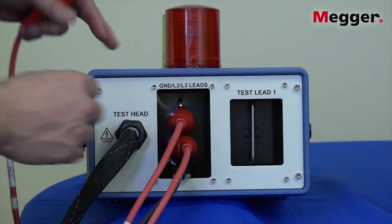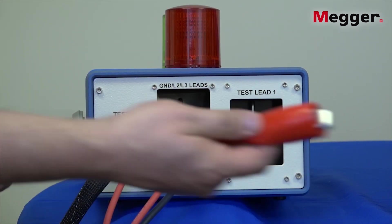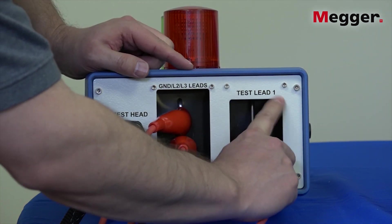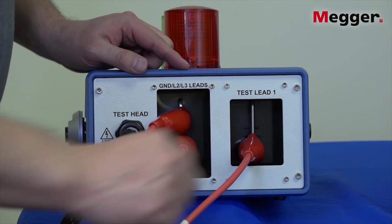Remember your leads are labeled one, two, and three. Test lead one, where the active voltage is going to come through, will connect to test lead one bar over here.